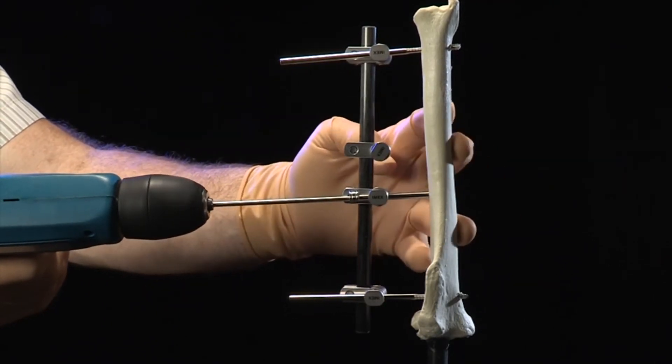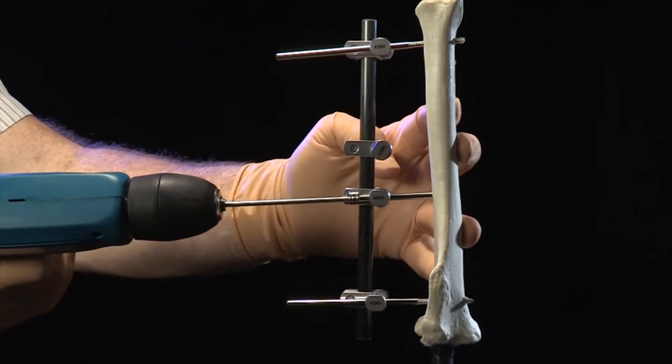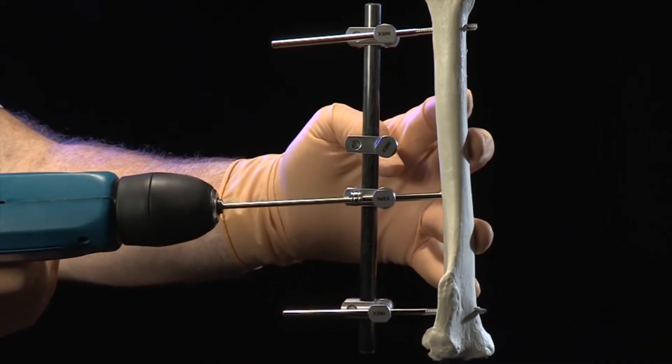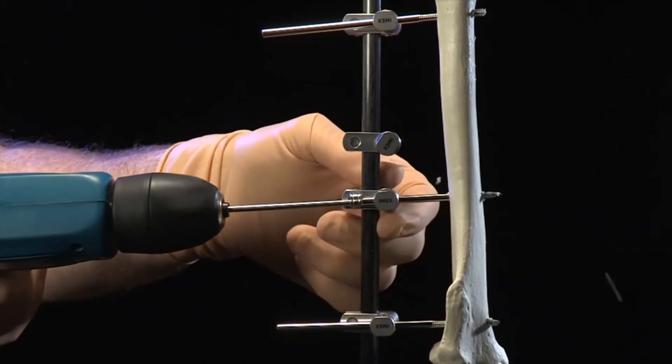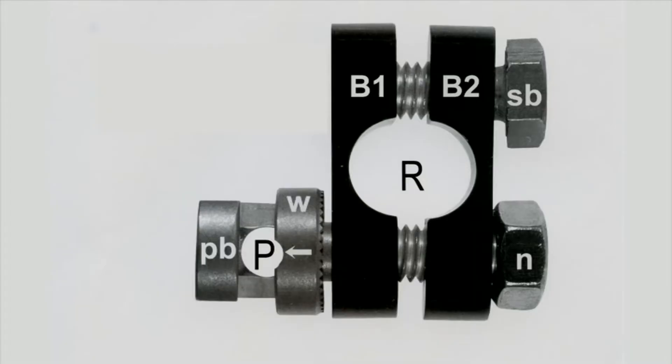The hole in the primary bolt is large enough to accommodate sleeved pre-drilling and application of positive profile or DuraFace pins directly through the bolt, while allowing the surgeon to pre-place a desired number of clamps on the external rod prior to pin application. The rod gripping channel labeled R is in the center of the clamp.